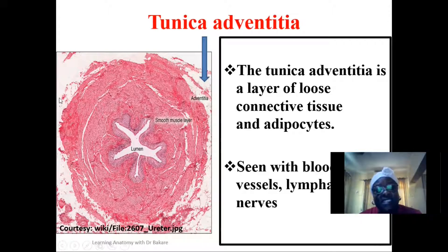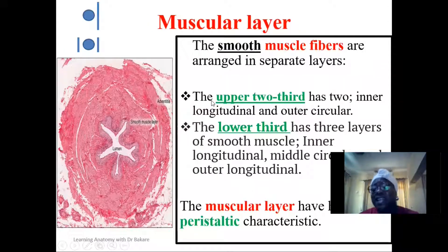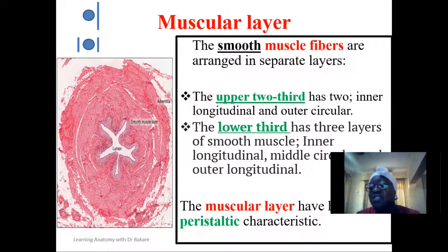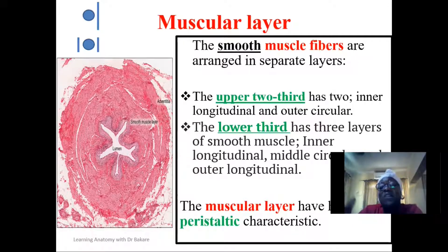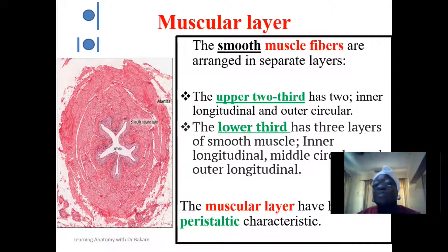The muscular layer is actually responsible for the main function of the ureter, which is to propel urine from the kidney down to the urinary bladder. This propelling activity occurs as a result of peristaltic movement — a periodic contraction and relaxation. As it contracts and relaxes, it pushes the contents located within it downward. The ureter is able to do this because of its muscular layer, located between the tunica adventitia and the mucosa layer.